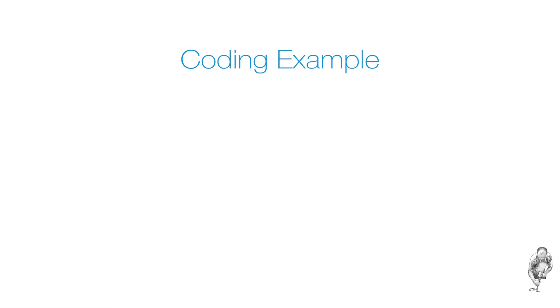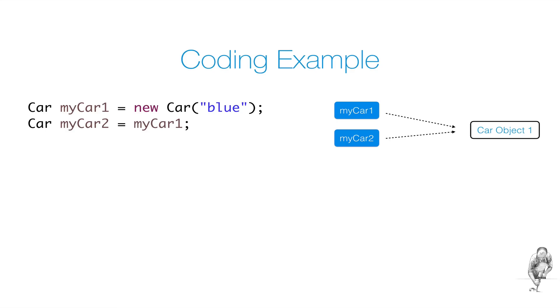To illustrate this, let's do a little coding example. We create a reference variable of type car named myCar1 and assign it a car object. Now we create a second car reference variable named myCar2 and assign it the value of the reference variable myCar1. This way both myCar1 and myCar2 reference the same object in memory.